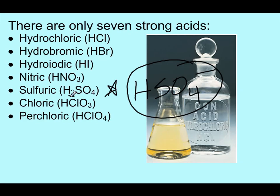Chloric acid and perchloric acid are the other two strong acids, also called strong electrolytes. Our weak acids are classified as weak electrolytes, or in some terms even non-electrolytes.